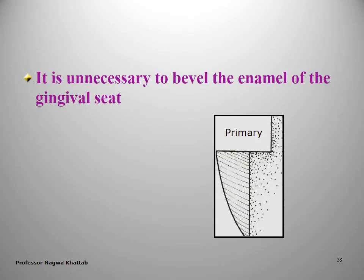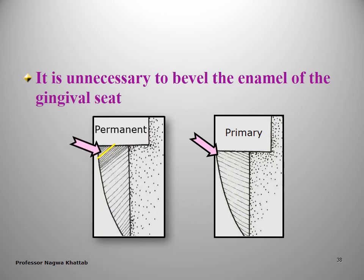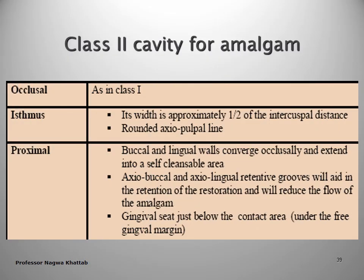It is unnecessary to bevel the gingival seat in primary teeth, since the enamel rods are directed occlusally in the cervical area. For permanent teeth, the enamel rods are directed gingivally; therefore, the gingival seat must be beveled. This is the summary for Class 2 cavity preparation, including occlusal, isthmus, and proximal portions.